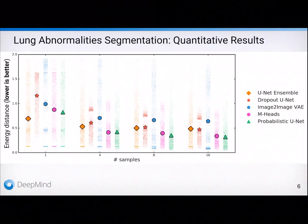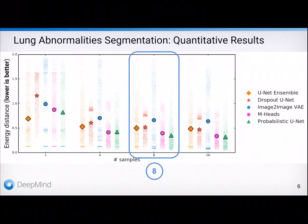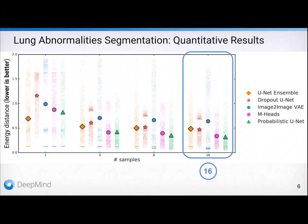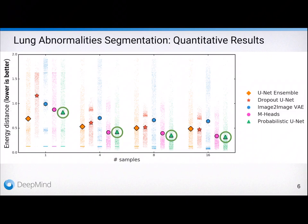For quantitative evaluation, we measure the difference between the predicted distribution and the ground truth distribution using the energy distance, also known as the maximum mean discrepancy. Note that lower scores are better. We compare against a range of baselines and the mean performance of each baseline is denoted by a different marker here. The performances are evaluated as we sample more often. We sample between 1 to 16 times and comparing the distributions of segmentations on this real-world lung CT dataset, the probabilistic U-Net, shown in green here, performs the best across a number of different samples.